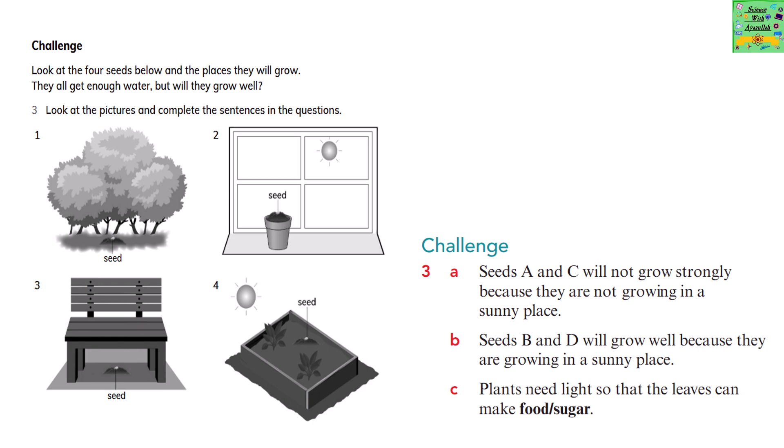Look at the four seeds below and the places they will grow. They all get enough water. But will they grow well? Look at the pictures and complete the sentences. Seeds A and C will not grow strongly because they are not growing in a sunny place. Seeds B and D will grow well because they are growing in a sunny place. Plants need light so that the leaves can make food or sugar.